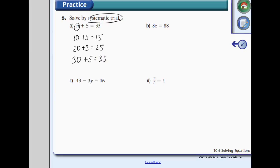Ah, we're close. We are two numbers too high. So we have to drop n by 2. Let's try 28. 28 plus 5 equals 33. This works. So therefore, n equals 28. This is systematic trial. A trial, basically the word try is inside there.